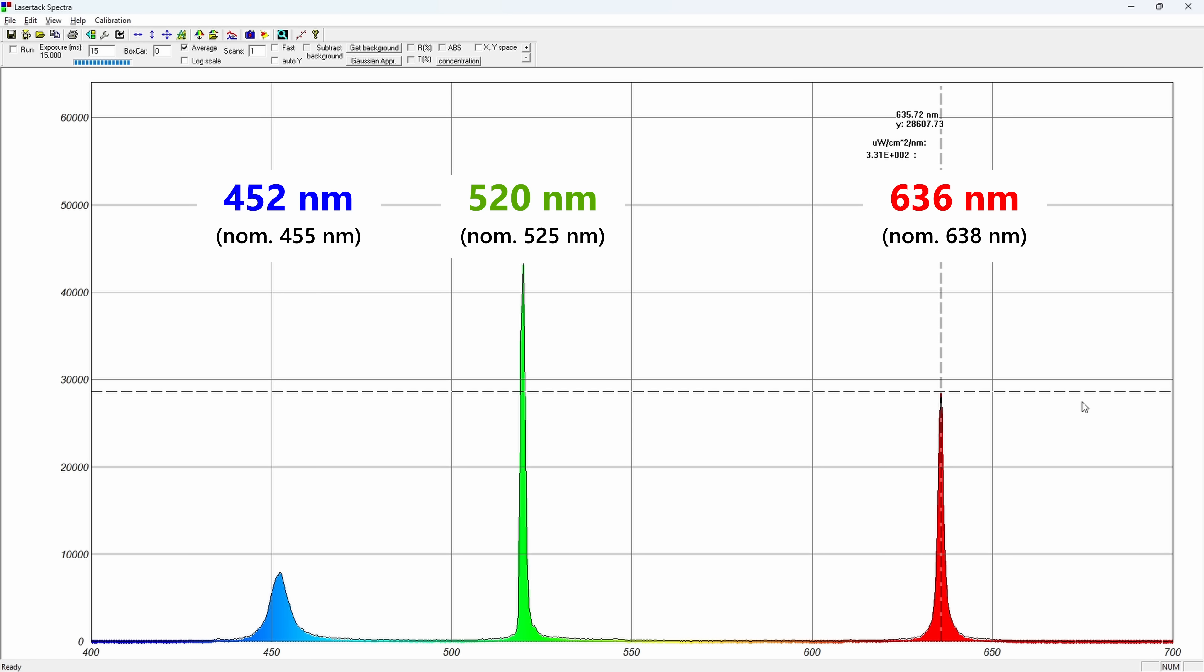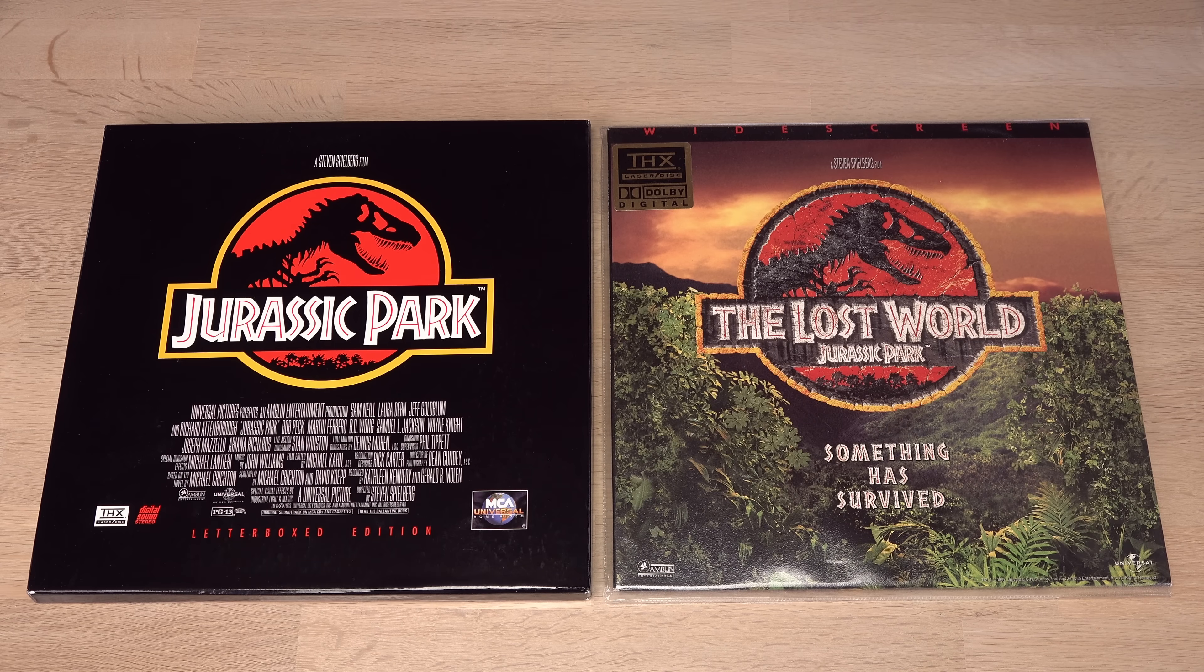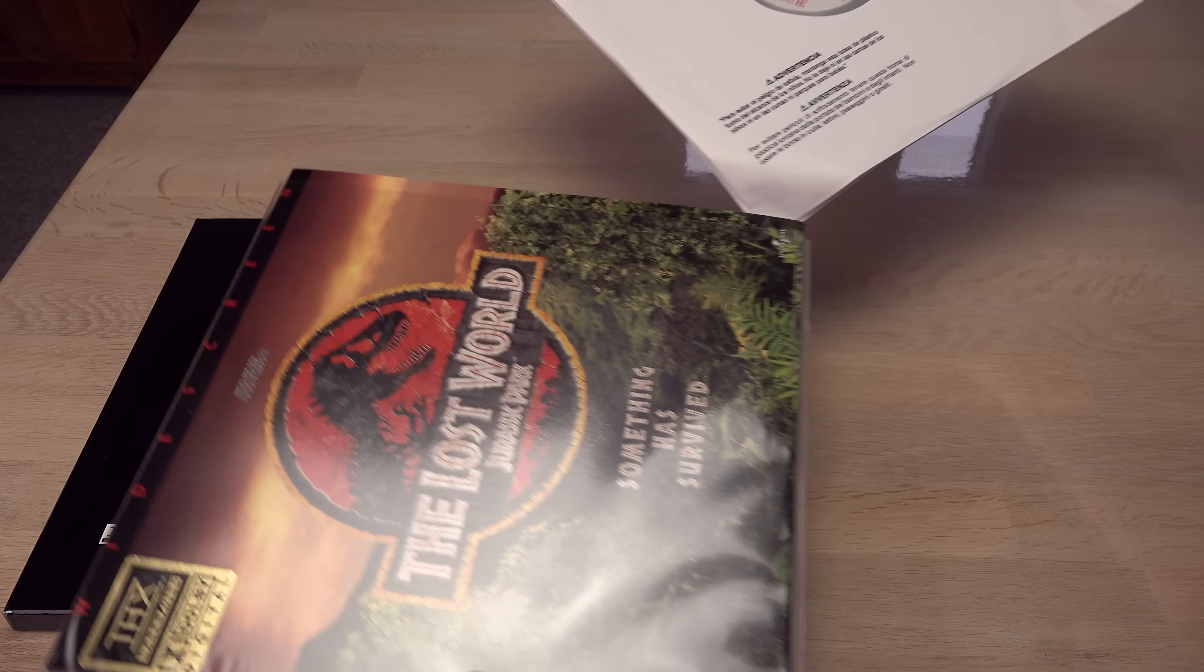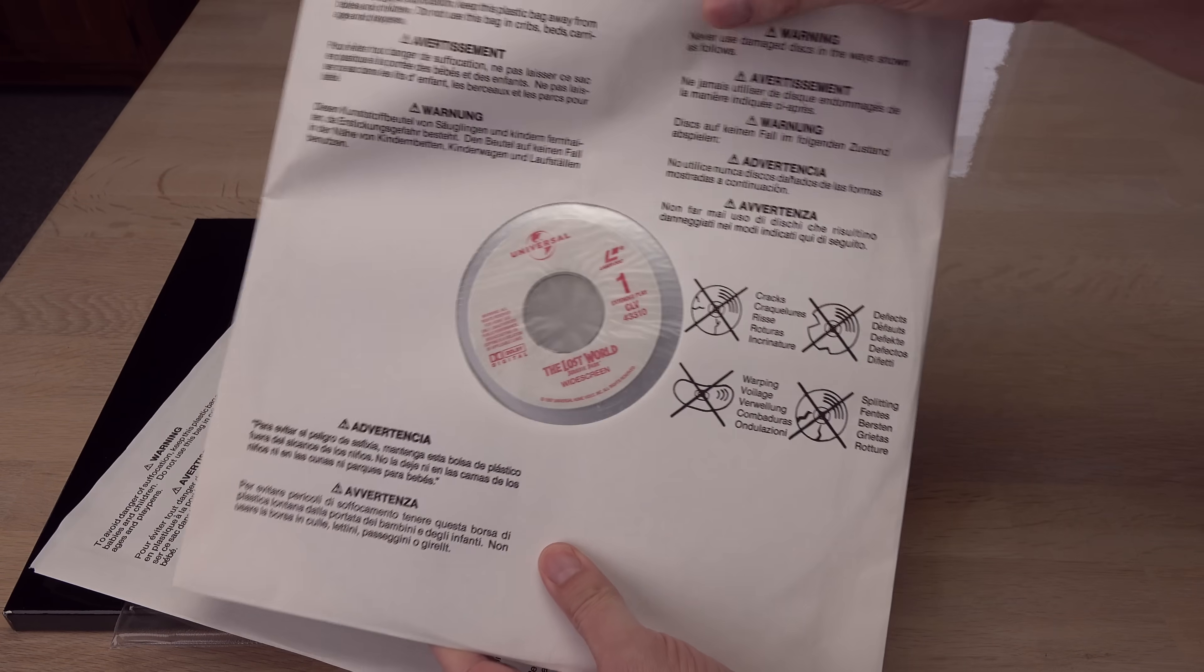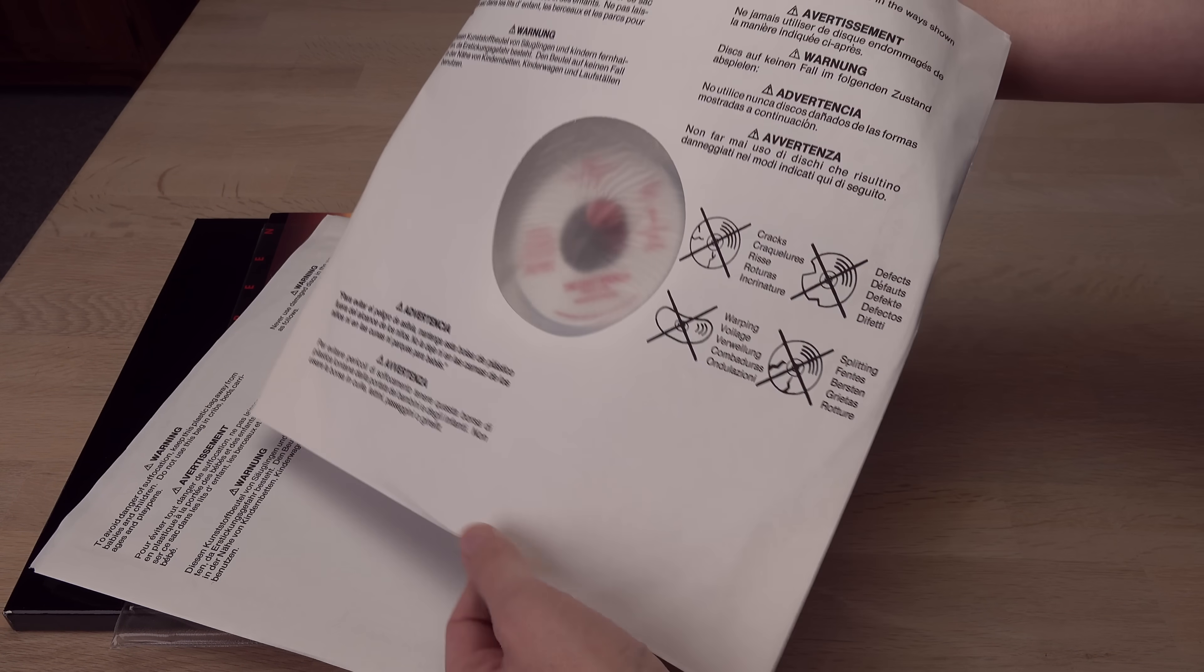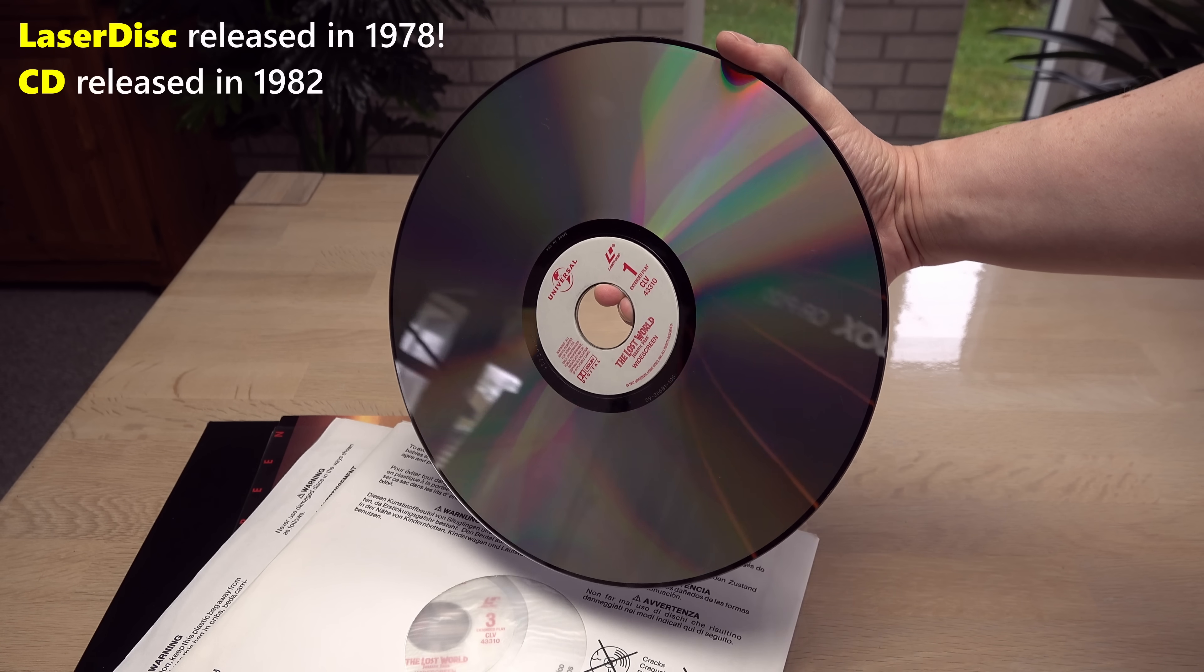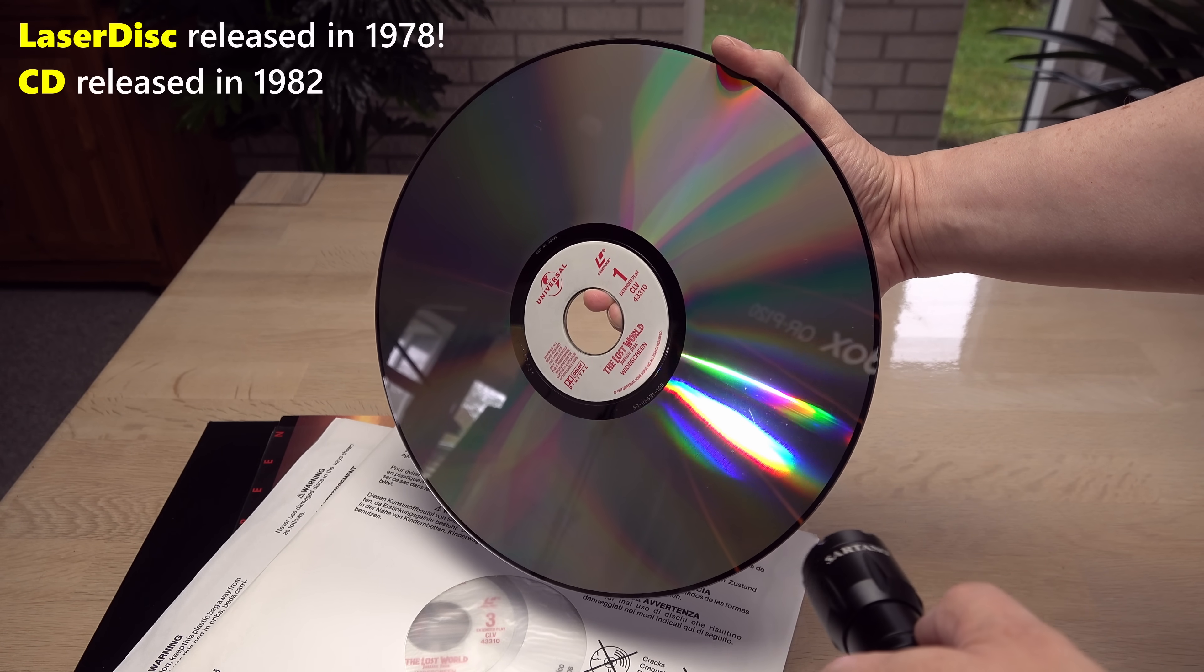With this information, I can now attempt to measure the track spacing of this ancient optical storage format, a laser disc, with the show laser. I can't find any reliable specifications on the track spacing online. Perhaps because this format predates the world wide web by more than a decade. Honestly, laser discs are not great diffraction gratings.